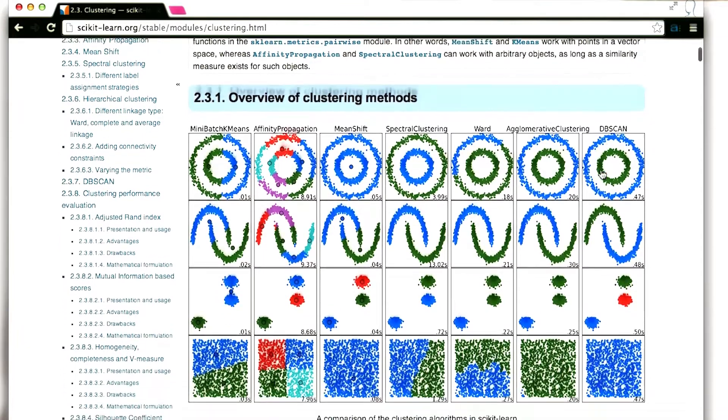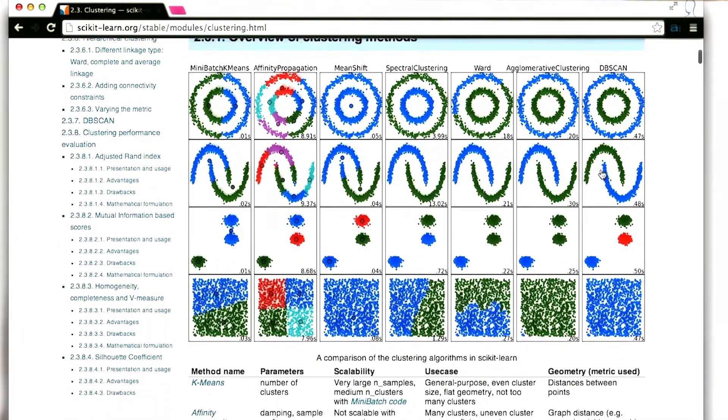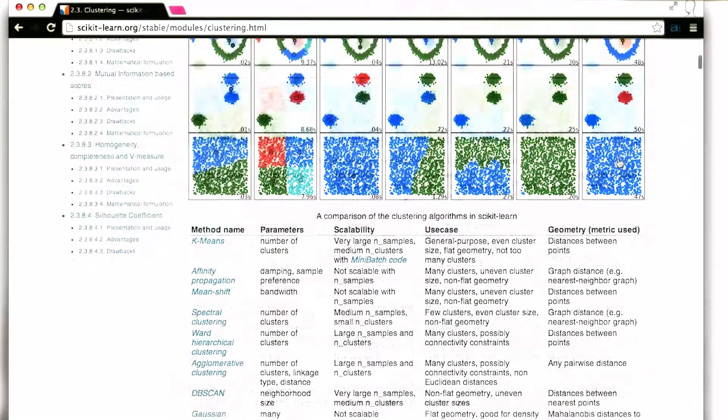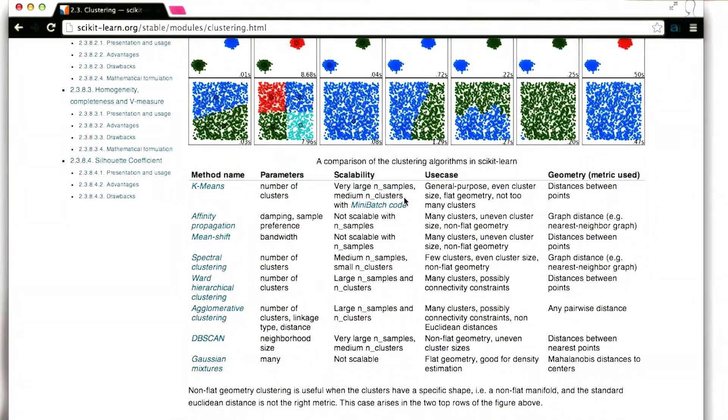Instead, I want to use this page to navigate to the K-means documentation so you can get a better idea of how this is handled in scikit-learn. So here's a list of all the different clustering methods. And here, the first item on the list we see is K-means and some summary information about the algorithm.